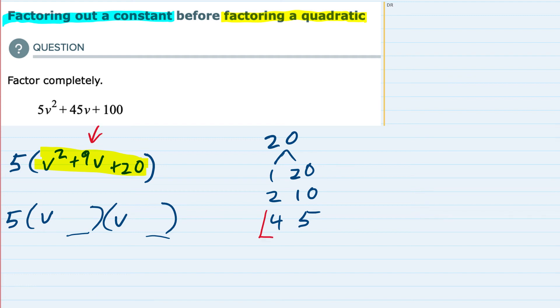So the combination that works is the 4 and 5. Because if I put a 4 and 5 in here, then in order to get a positive 20 when I multiply, the signs have to be the same.